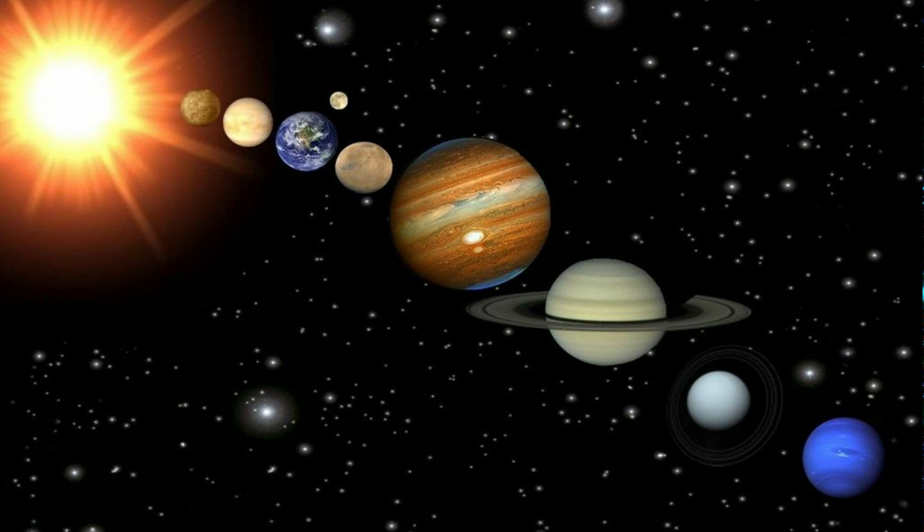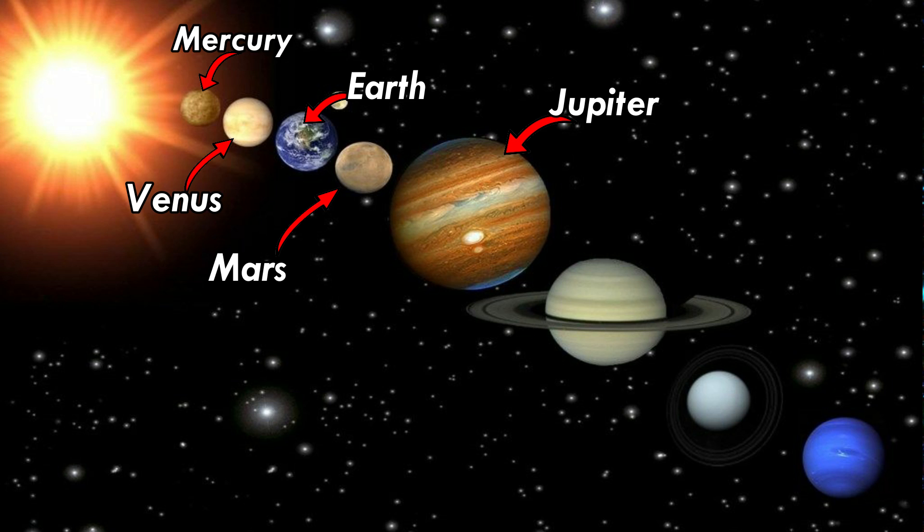The first planet is Mercury. Mercury is the closest planet to the sun. The second planet is Venus. Our planet Earth is the third planet from the sun. The fourth planet is Mars. The fifth planet is Jupiter. That's the biggest planet of them all.